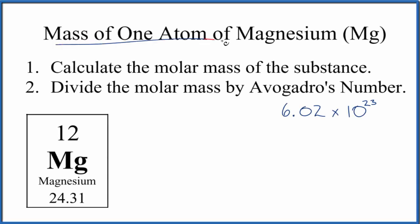Let's calculate the mass for one atom of magnesium (Mg), and this is the mass of an average magnesium atom. So really to do it, all we need is to calculate the molar mass, in this case the atomic mass, and divide by Avogadro's number.